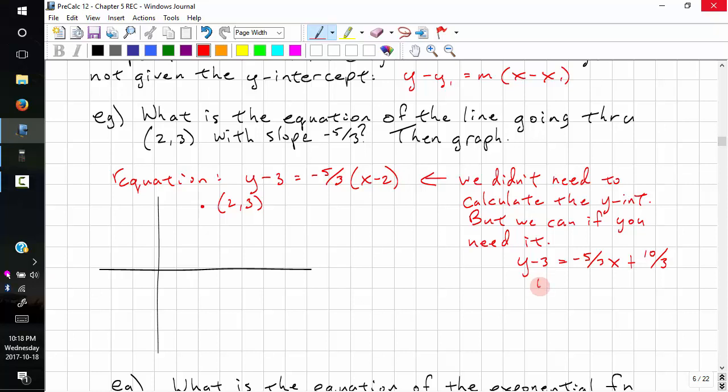And then we have y equals negative 5 over 3x plus 10 over 3 plus, let's convert this 3 to have a common denominator. So we multiply by 3 over 3, we get 9 over 3. And we get y equals negative 5 over 3x plus 19 over 3. And there's our y-intercept, 19 over 3.